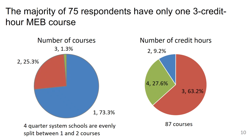The majority of our schools require only one course, and that course is usually three credit hours. On the left-hand side we have the number of courses required: 73% of the schools require only one course and 25% require two courses. The quarter system schools are evenly split between requiring one course and two courses. 87 courses were described, and nearly two-thirds of those courses are three credit hours, a quarter are four credit hours, and a substantial number are only two credit hours.